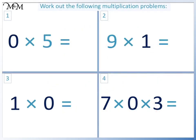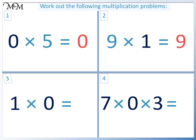Here are some questions for you to try. Work out the following multiplications. Pause the video and have a go. Question 1: we are multiplying by 0, so our answer is 0. Question 2: we are multiplying by 1, so 9 stays as 9. Question 3: we are multiplying by 0, so our answer is 0. Question 4: we are multiplying by 0, so our answer is 0.